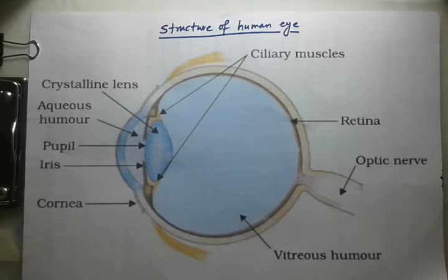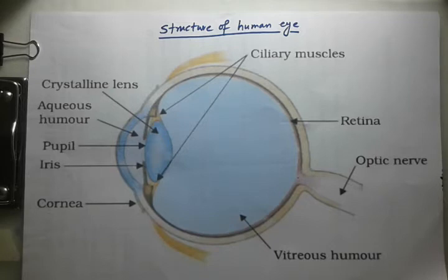This ability of the eye lens to change its focal length is known as accommodation. The ability of the eye lens to change its focal length is called accommodation. This enables the eye lens to focus the image of objects at different distances onto the retina of the eye.